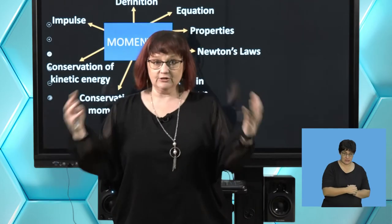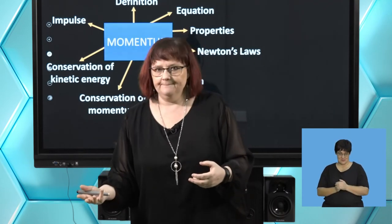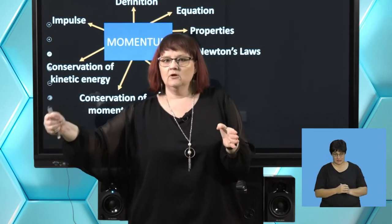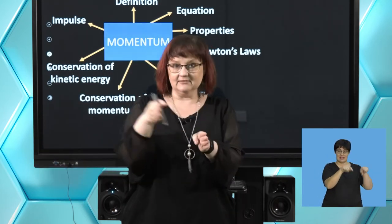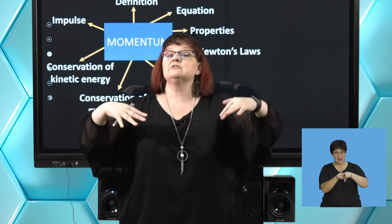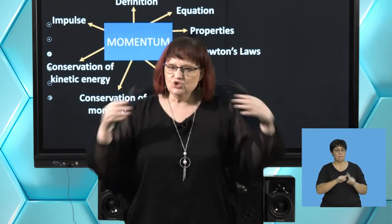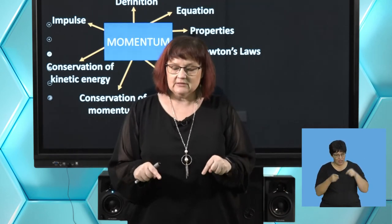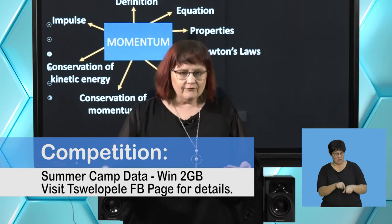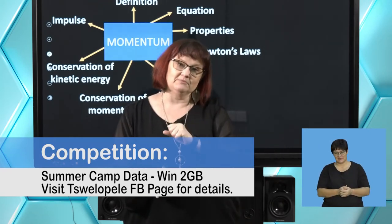F net × ΔT can be affected by time. When we want to make the net force smaller, we have to make the time bigger. F net × ΔT equals change in momentum. When two objects collide, they experience the same net force in opposite directions, so they have the same impulse just in opposite directions — which means both objects experience the same change in momentum.